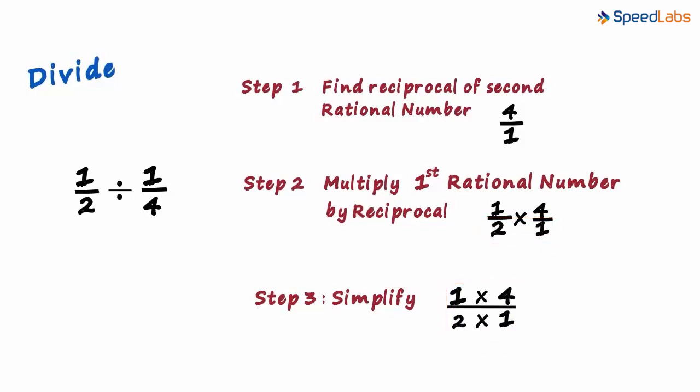Two and four have two as a common factor. Two multiplied by two equals four. After simplification, we get the numerator as one multiplied by two and the denominator as one multiplied by one. Our rational number reduces to two by one which equals two. It was simple. One by two divided by one by four equals two.